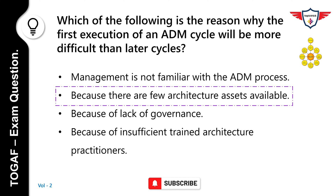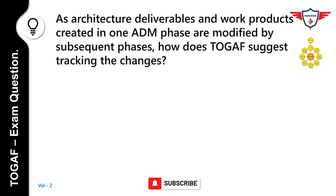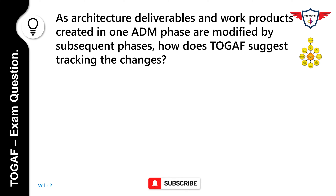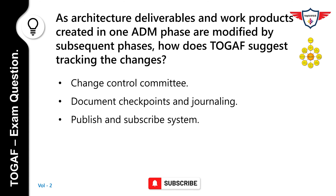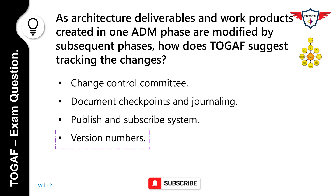As architecture deliverables and work products created in one ADM phase are modified by subsequent phases, how does TOGAF suggest tracking the changes? Options: Change Control Committee, Document Checkpoints or Journaling, Publish and Subscribe System, Version Numbers. The correct answer is Version Numbers. During the execution of the ADM cycle, many documents are generated in each phase; the versioning of output documents is managed through version numbers.